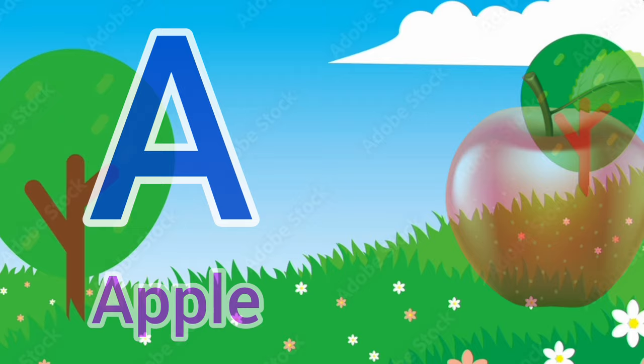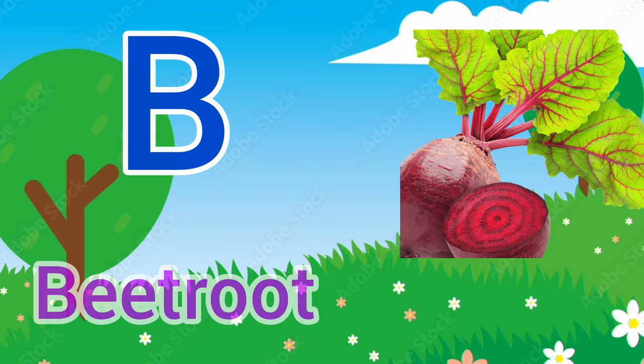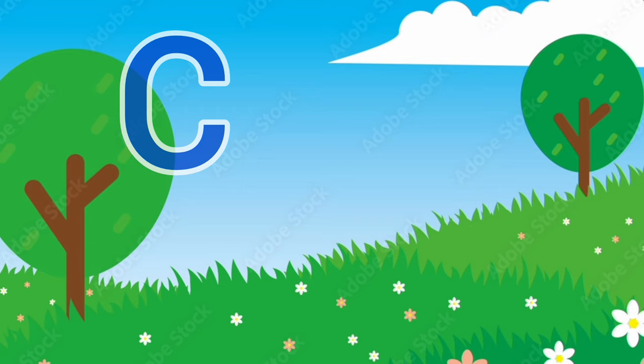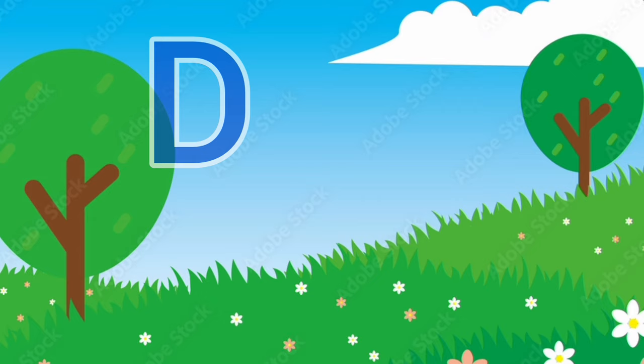B. B for beetroot, beetroot means chukandar. C for custard apple, custard apple means sitafal.